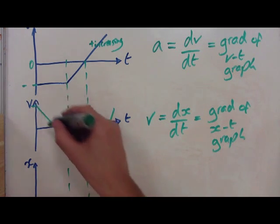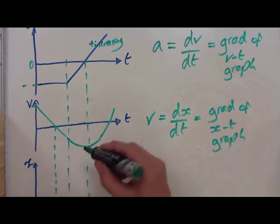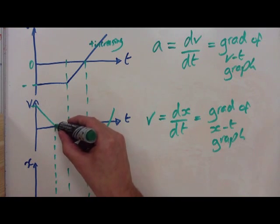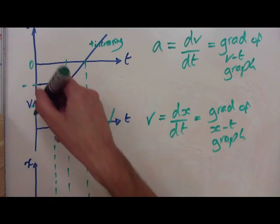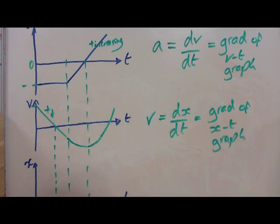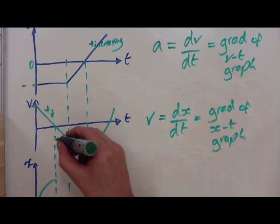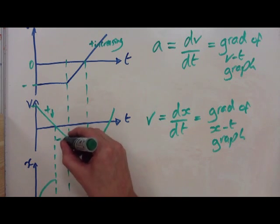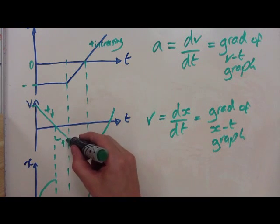And it gets lower and lower and lower until this point here, which is now a point of interest. At this point here, it goes to zero. So it's positive, remains positive, but it gets lower. So positive but decreasing. Positive but decreasing until it gets to zero there. So it then becomes negative and gets more and more negative. So negative and going up.